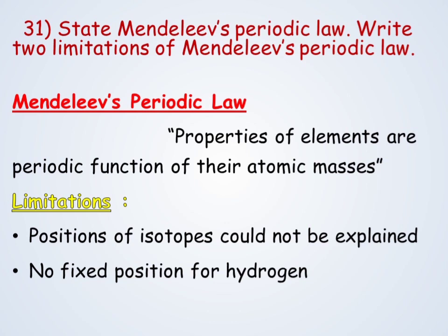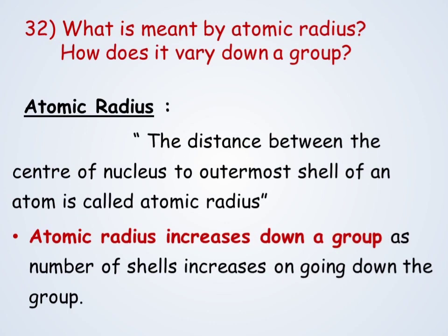Mendeleev's periodic law states that properties of elements are a periodic function of their atomic masses. The two limitations are: the position of isotopes could not be explained, and there was no fixed position for hydrogen. What is meant by atomic radius? Atomic radius is the distance between the center of the nucleus to the outermost shell of an atom. Atomic radius increases down a group because the number of shells increases as we go down the group.